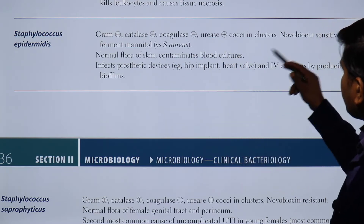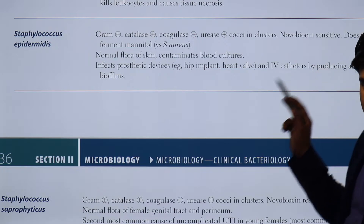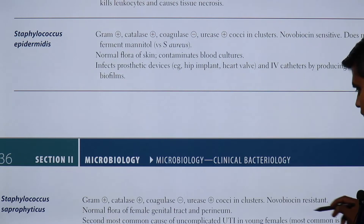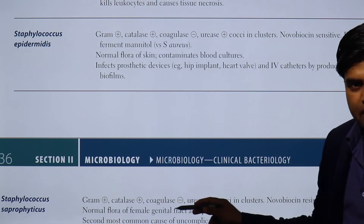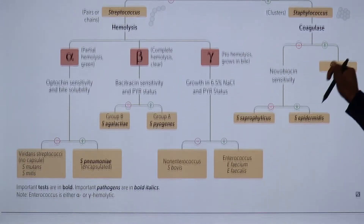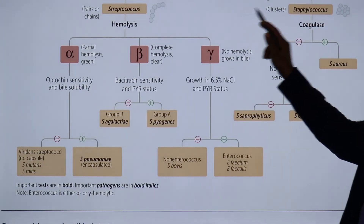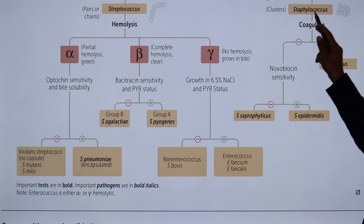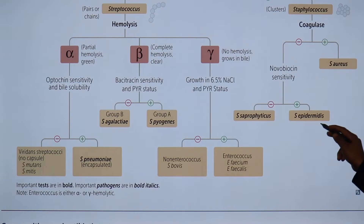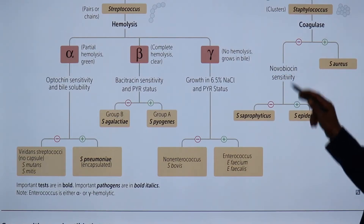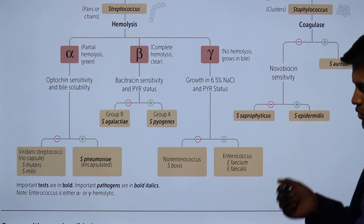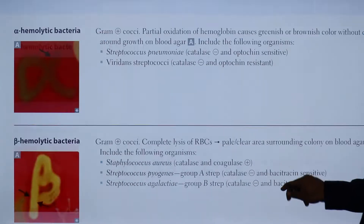So how can we differentiate between these two? By a test known as the novobiocin test. Novobiocin sensitive is Staphylococcus epidermidis; novobiocin resistant is Staphylococcus saprophyticus. Among the gram-positive, catalase-positive, coagulase-negative staphylococcus group, novobiocin sensitive is S. epidermidis whereas resistant is S. saprophyticus.